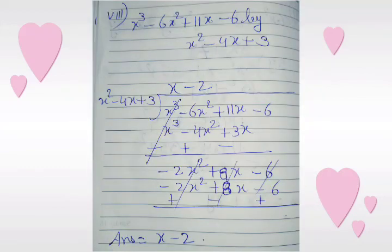Next sub-part: x cubed minus 6x squared plus 11x minus 6 divided by x squared minus 4x plus 3. We multiply x squared minus 4x plus 3 with x and get x cubed minus 4x squared plus 3x. We change the sign of the last line — the first term is cancelled — and after solving we get minus 2x squared and plus 8x. We copy down minus 6.